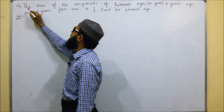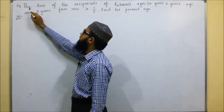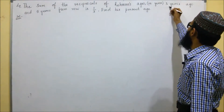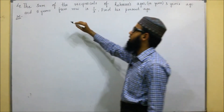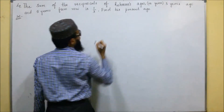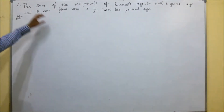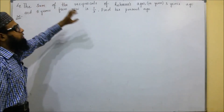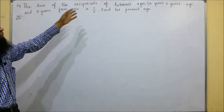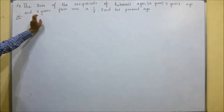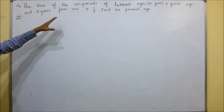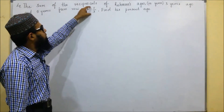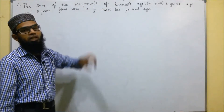This is the fourth problem. They have given that the sum of the reciprocals of Rahman's ages in years, three years ago and five years from now, is one by three. Find his present age. We are going to find the reciprocals of Rahman's age and use that to find his present age.